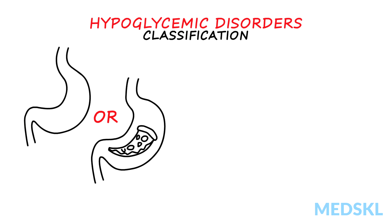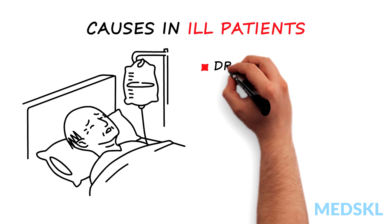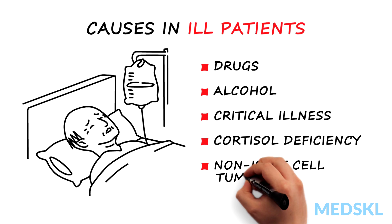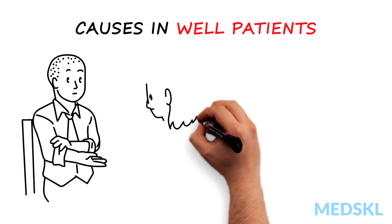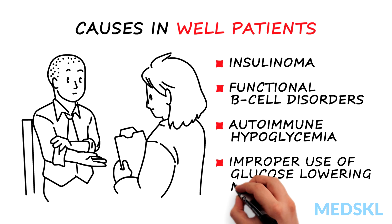Hypoglycemic disorders used to be classified as fasting or postprandial. However, a more useful classification is based on whether the patient is seemingly well or ill. Causes in the ill patient include drugs, alcohol, critical illness, cortisol deficiency, and non-islet cell tumors. Causes in the seemingly well patient include insulinoma, functional beta cell disorders, autoimmune hypoglycemia, and accidental, surreptitious, or malicious ingestion of glucose-lowering medication.